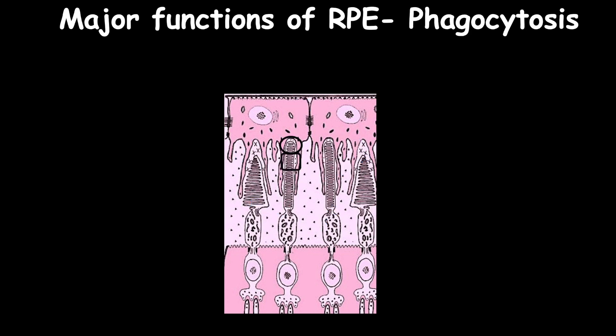Photoreceptor outer segments go through constant destruction due to photooxidative damage. To maintain vision, the photoreceptor outer segments are constantly renewed by shedding the destroyed tips of the outer segments and by phagocytosis of the photoreceptor outer segments by the retinal pigment epithelium. This is a generally regulated process which takes place in the morning, triggered by light, and it takes approximately 11 days to renew the whole length of the photoreceptor outer segment.